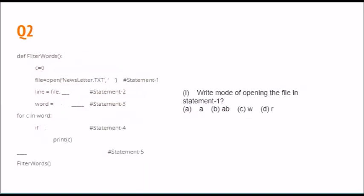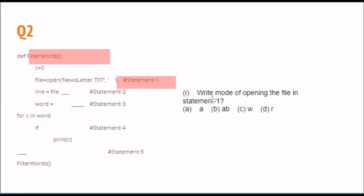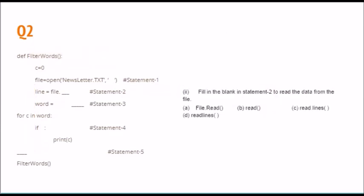The next question has a function named filter_words. For statement number one, we need to determine what mode to use to open the file. Looking at the code ahead, there is no place where we are writing content, so the correct answer is read mode. For blank two, since we are reading the entire file, read() is the correct option.